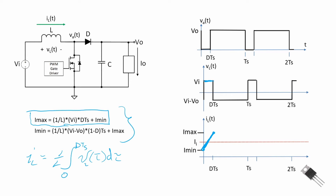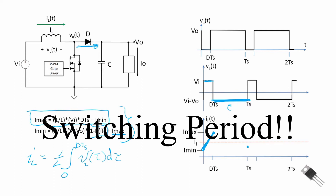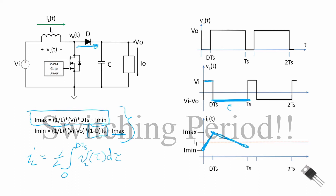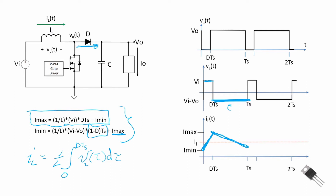When we open the MOSFET, or the low side switch, the current will now flow through the diode, and its voltage is V_i minus V_o — a negative constant. When we integrate a negative constant, we get a linear function with a negative slope. It starts at I_max and ramps back down to I_min over the time period during which that switch is open: (1 − D) times the switching period. This gives us the current waveform through the inductor.